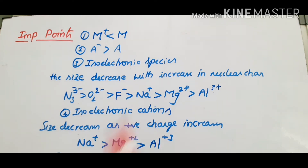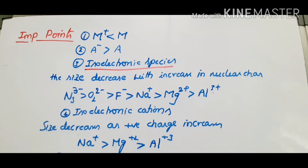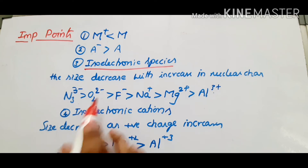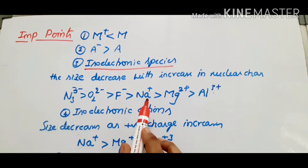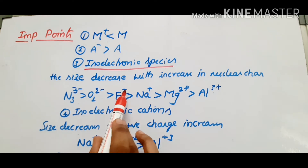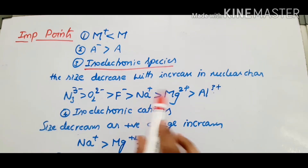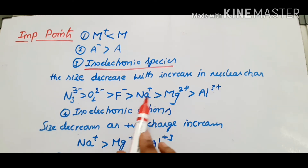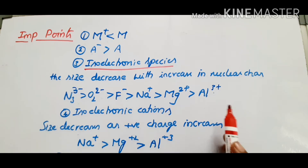Next, isoelectronic species. What is isoelectronic species? Same number of electrons — those are isoelectronic species. For example, O2- minus 2, F- minus 1. Fluorine has atomic number 9; 9 plus 1 electron equals 10 electrons. Sodium plus has atomic number 11; 1 electron is removed, so 10 electrons. Any species with the same number of electrons are isoelectronic.